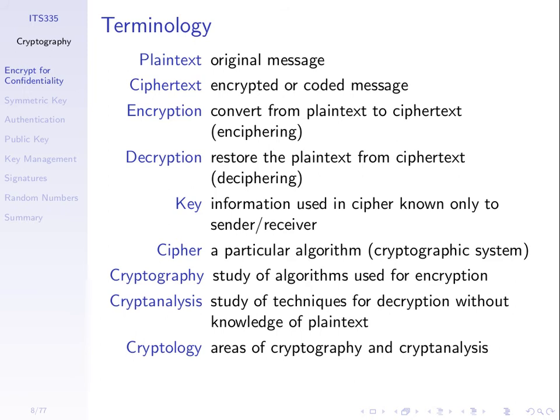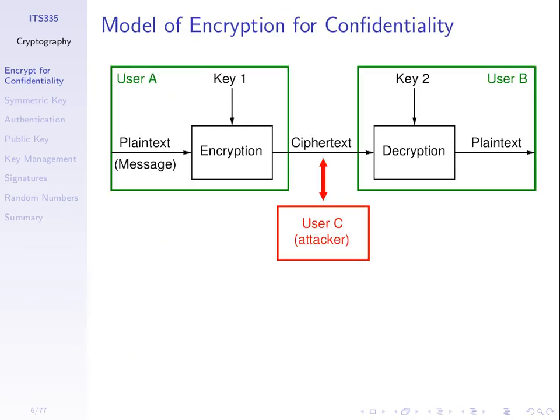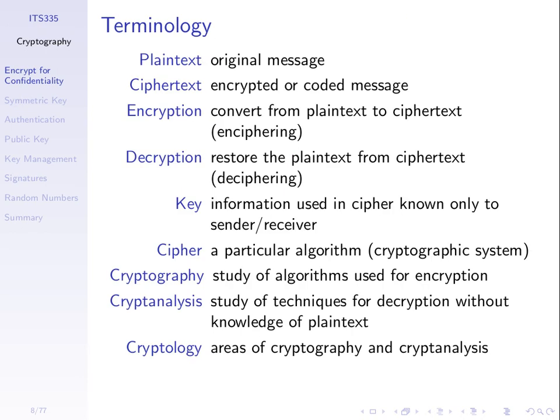Cryptography is the study of these algorithms — of ciphers. The studying and designing of ciphers is cryptography. Cryptanalysis is the study of the techniques for obtaining the plain text without the key — how do we get the plain text? That is, breaking the ciphers. If we can find a technique for C to use the ciphertext and get the plain text without knowing the key, then our system will not be successful — it'll have a flaw. So cryptanalysis is the study of those techniques. Cryptology is the combination of cryptography and cryptanalysis — cryptography is creating the algorithms, cryptanalysis is breaking them.